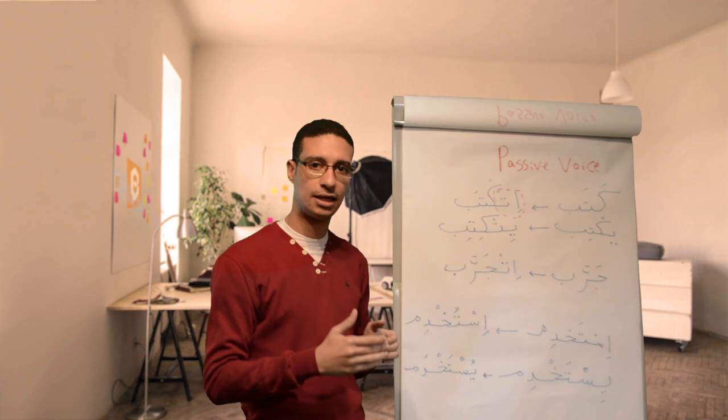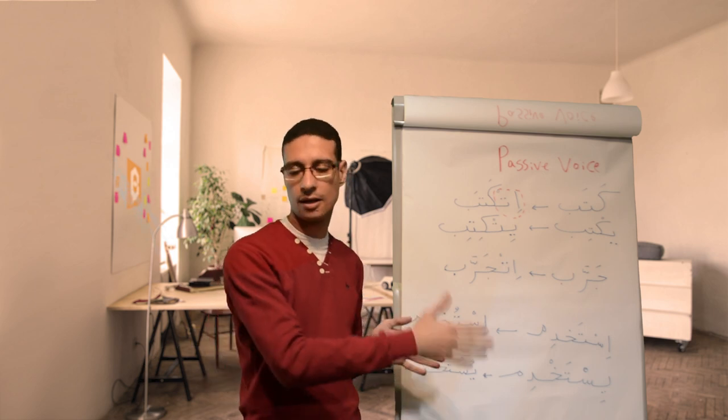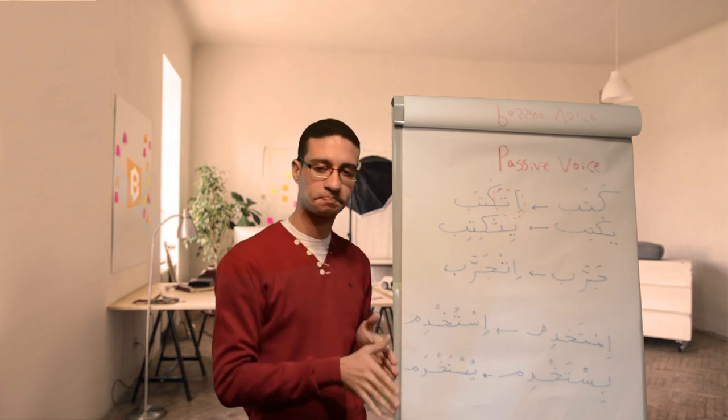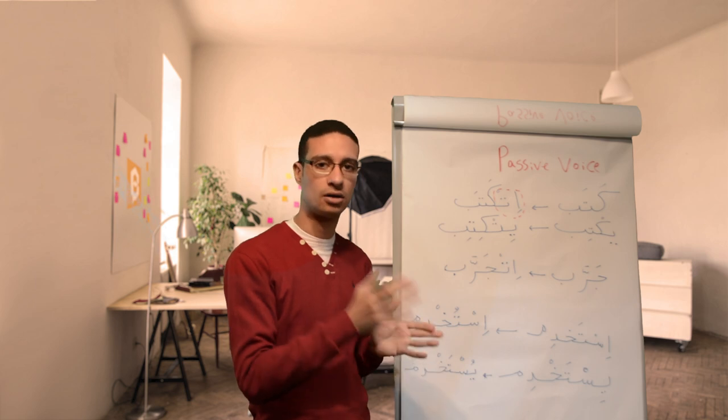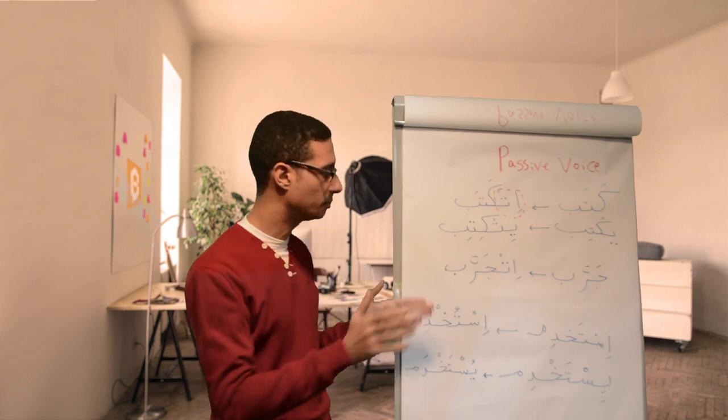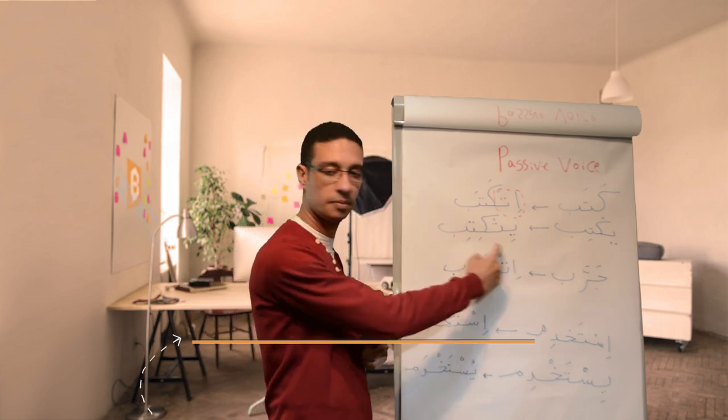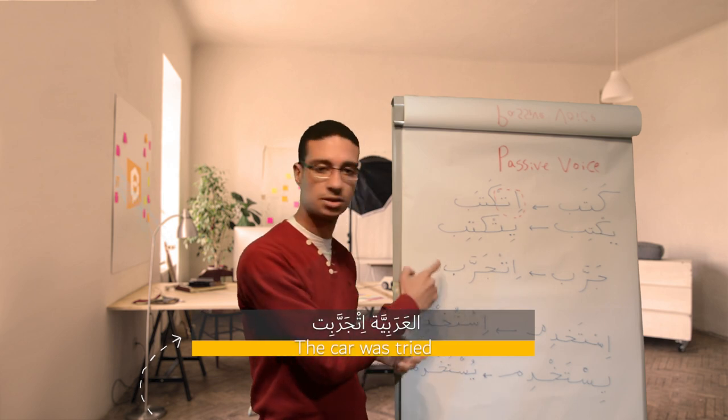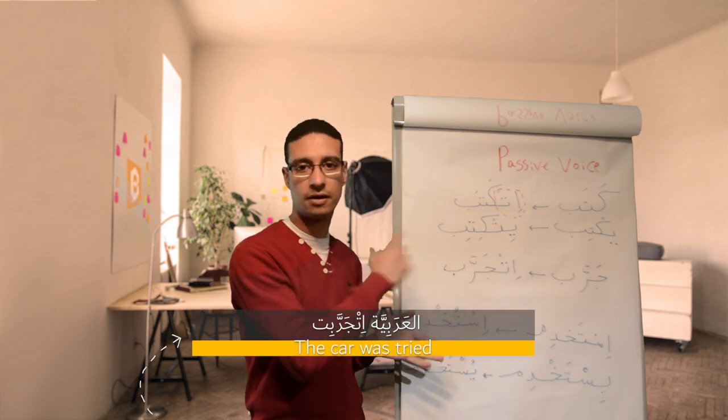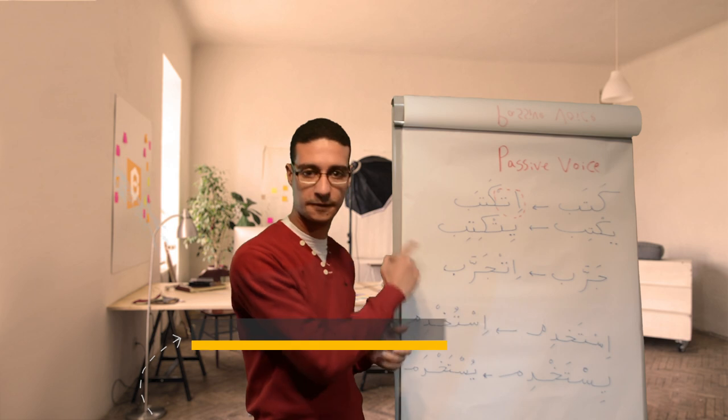He tried out the car, or he tested the car, huwa garrab al-arabiya, arabiya, car. So huwa garrab al-arabiya, so al-arabiya, the car, it-garrabat, because it's feminine. So it-garrabat, okay.